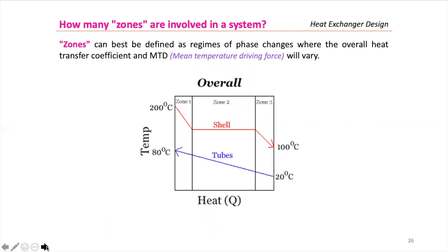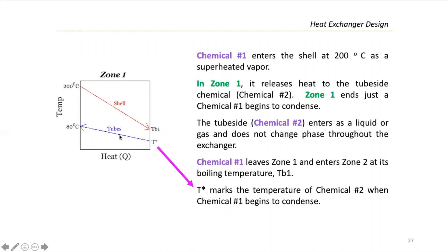When we deal with heat exchangers with phase change — and this is a problem we are going to solve today — the best idea is to divide the problem into zones. We divide the problem into pieces: solve zone one, then zone two, then zone three, or as many zones as you have, and we add the areas. Zones are best defined as regions of phase changes where the overall heat transfer coefficient and mean temperature difference will vary. The strategy is to solve zone by zone.